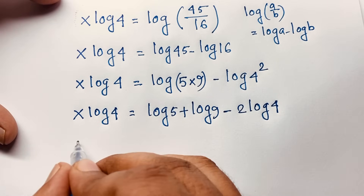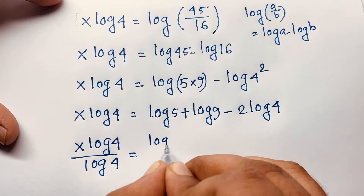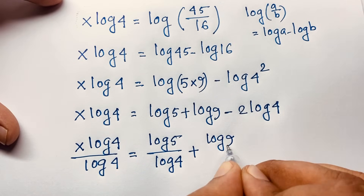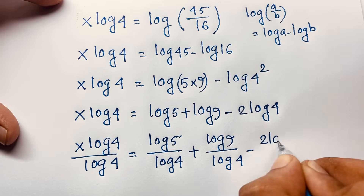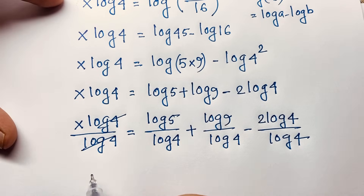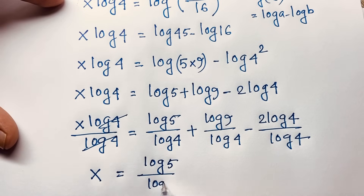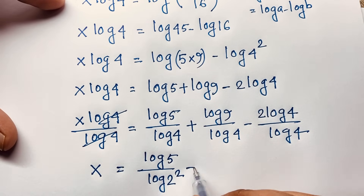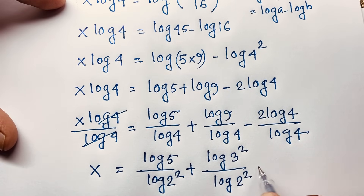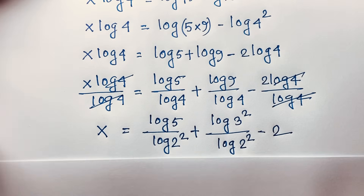Dividing both sides by log 4, we get x equals log 5 over log 4 plus log 9 over log 4 minus 2 log 4 over log 4. The last term simplifies to 2. Then log 4 equals log 2 to the power 2, so log 5 over log 4 becomes log 5 over 2 log 2.